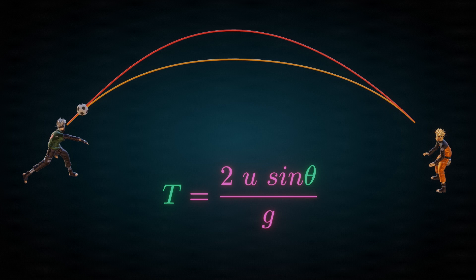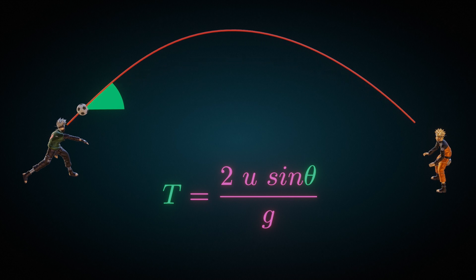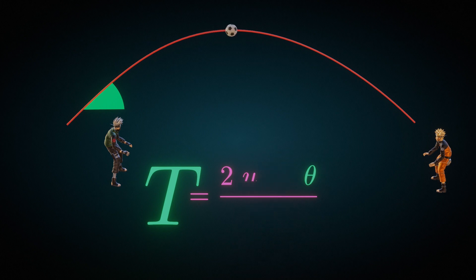Here, you can see time is dependent on angle of launch. Since higher trajectory has greater angle than lower trajectory, the higher trajectory will result in a longer time for the ball to reach Naruto.